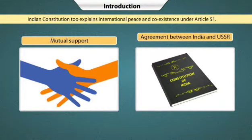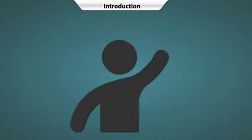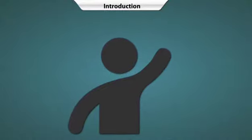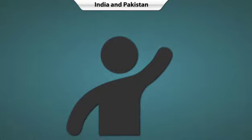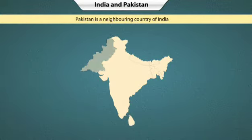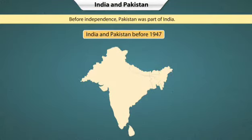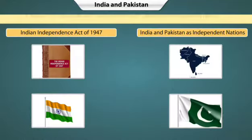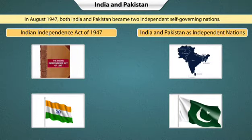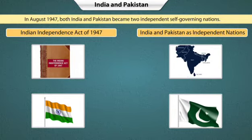Let us learn about India's relationship with other countries, namely Pakistan, Russia and USA. Pakistan is a neighbouring country of India. Before independence, Pakistan was part of India. However, in August 1947, Pakistan was separated from India and both India and Pakistan became two independent, self-governing nations.